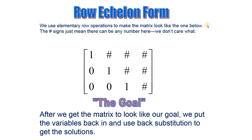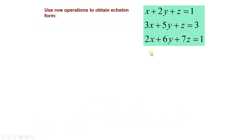جو system of equation ہوتا ہے اس کے augmented matrix کو ہم row echelon form میں change کرتے ہیں۔ پھر اسی matrix سے ہم system of equation واپس لکھتے ہیں اور back substitution سے solution set ملتا ہے۔ یہاں پہ z کی value ملتی ہے، جہاں سے y کی value ملتی ہے، اور یہاں سے x کی value ملتی ہے۔ Value of x, y, z will be the required solution set. اب ہم دیکھتے ہیں کہ system of equation ہے — use row operations to obtain echelon form.